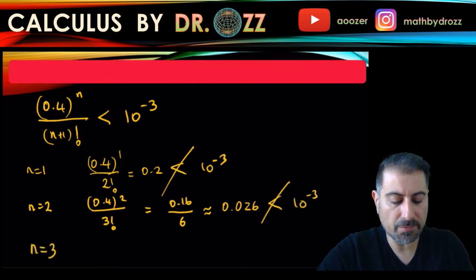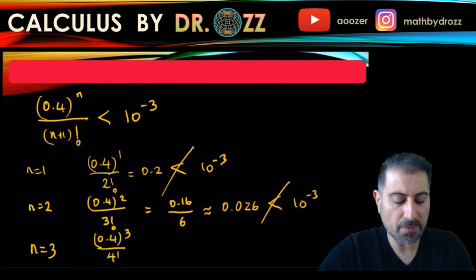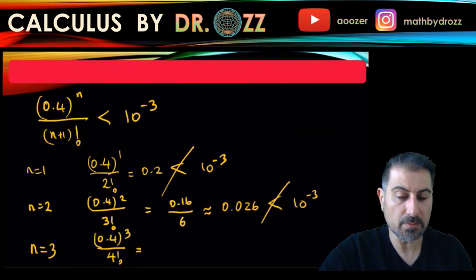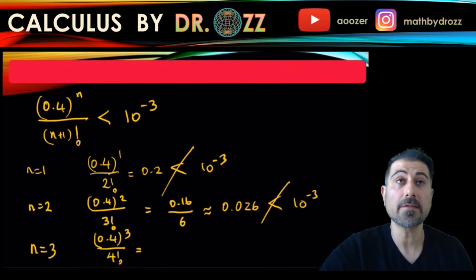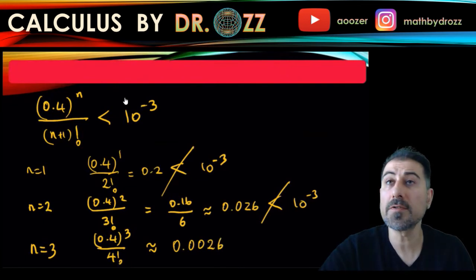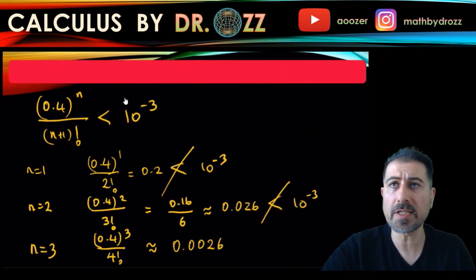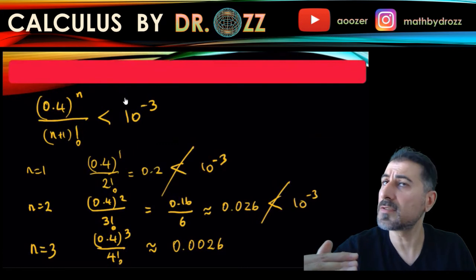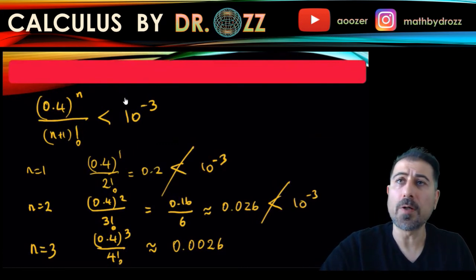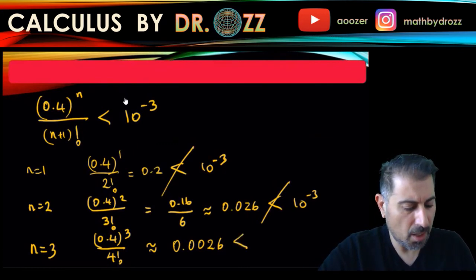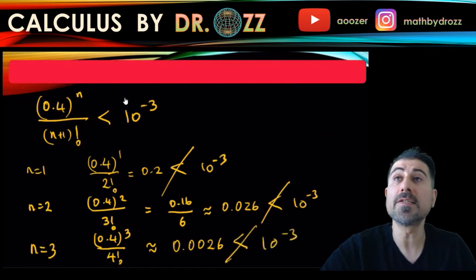n equals 3, 0.4 cubed divided by 4 factorial. Let's use our calculator. All right, you can always pause the video, by the way, do all of these calculations by yourself, because this is a trial error part, so this is not less than 10 to the minus 3.